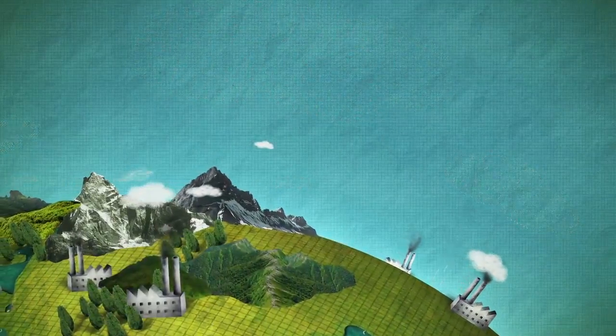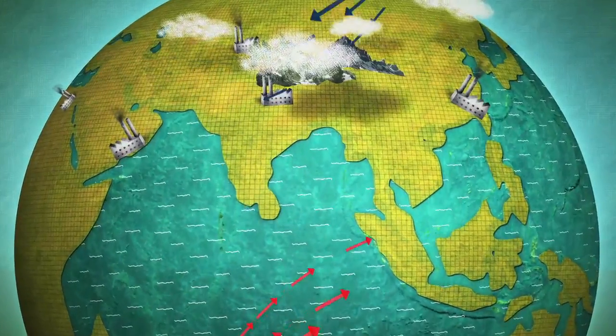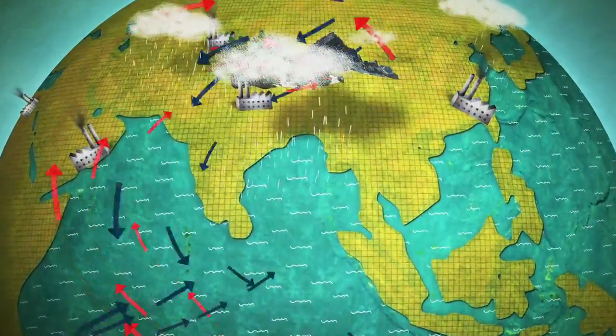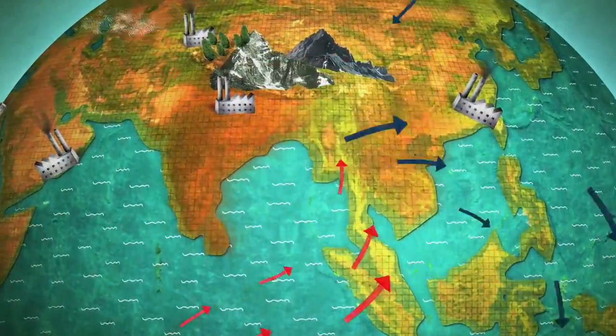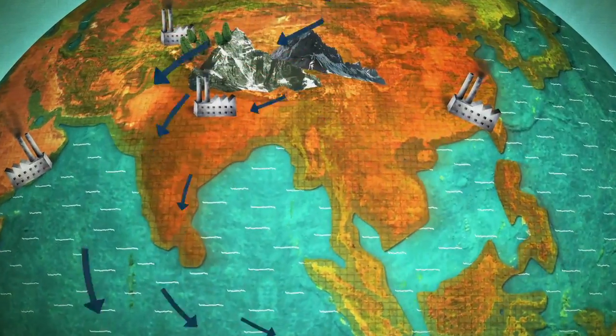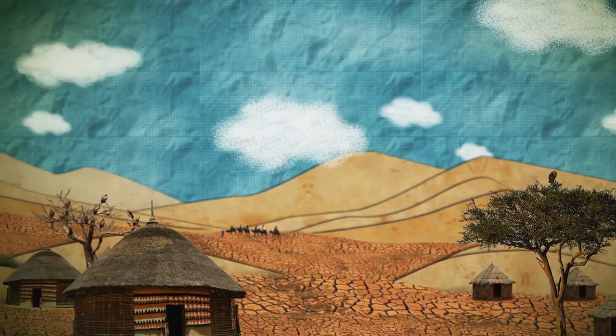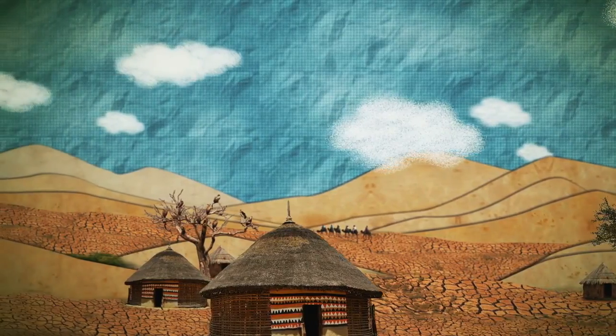In Asia, SAI could upset the complex system governing the monsoon, on which the water and food supply of two billion people depends. It could also lead to droughts in sub-Saharan Africa, while causing flooding in Latin America.